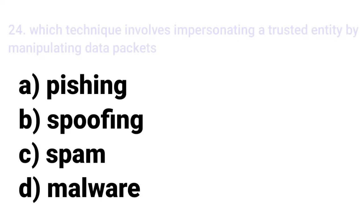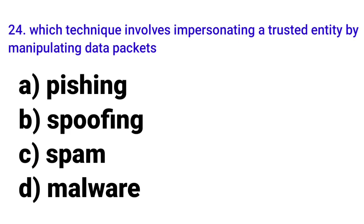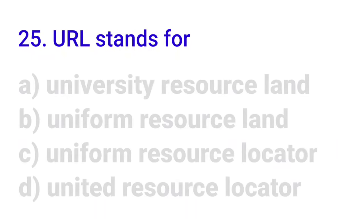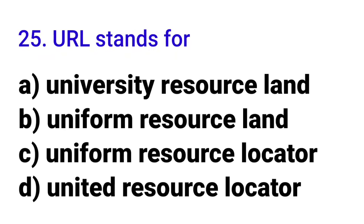Twenty-fourth MCQ: 'Which technique involves impersonating a trusted entity or device by manipulating data packets?' When someone creates a fake website or fake app impersonating a trusted company, that is called spoofing. The answer is option B: spoofing. Twenty-fifth MCQ: 'URL stands for?' The answer is option C: Uniform Resource Locator.